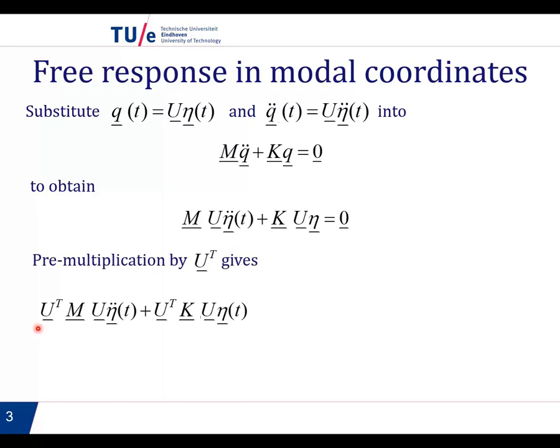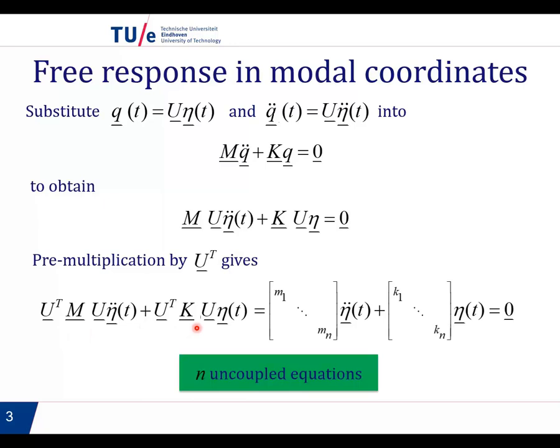And if you recall the lecture on orthogonality, this should ring a bell. We see here U transpose M U, and U transpose K U. If you remember, these two are diagonal matrices. U transpose M U is a diagonal matrix with the modal mass factors in the diagonal, and U transpose K U is a diagonal matrix with the modal stiffness factors in the diagonal.